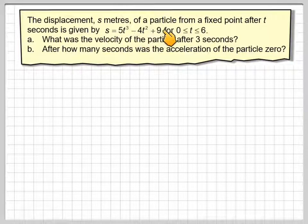The displacement s meters of a particle from a fixed point after t seconds is given by s equals 5t cubed minus 4t squared plus 9, for t being between 0 and 6 inclusive. What was the velocity of the particle after 3 seconds? After how many seconds was the acceleration of the particle zero?